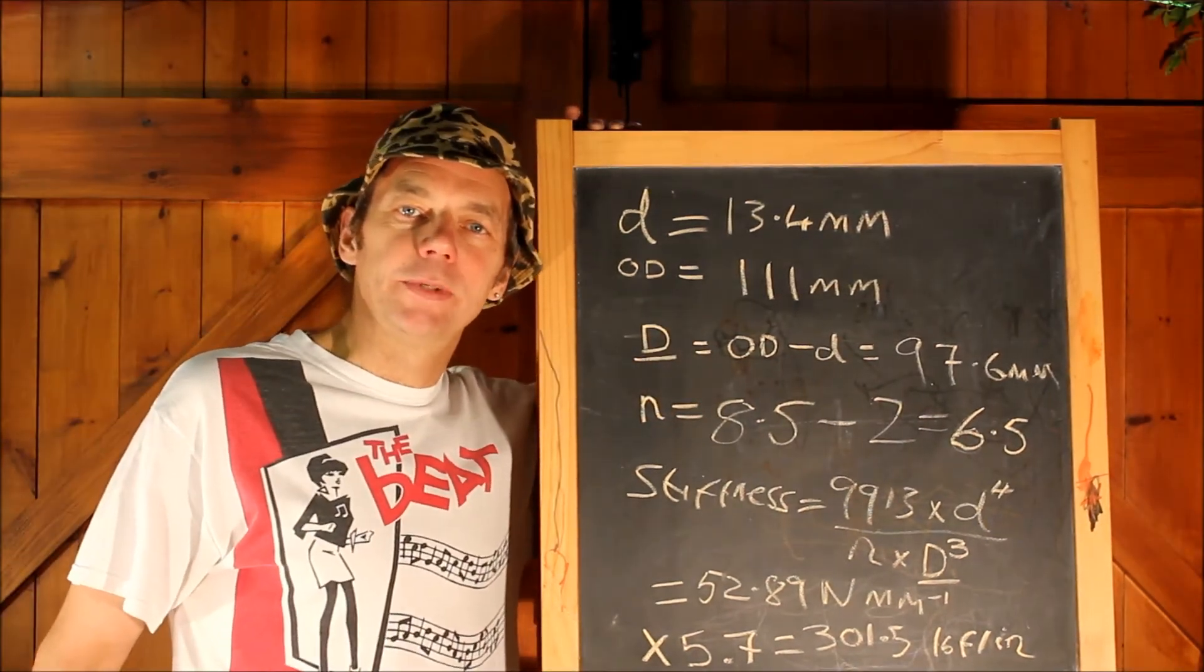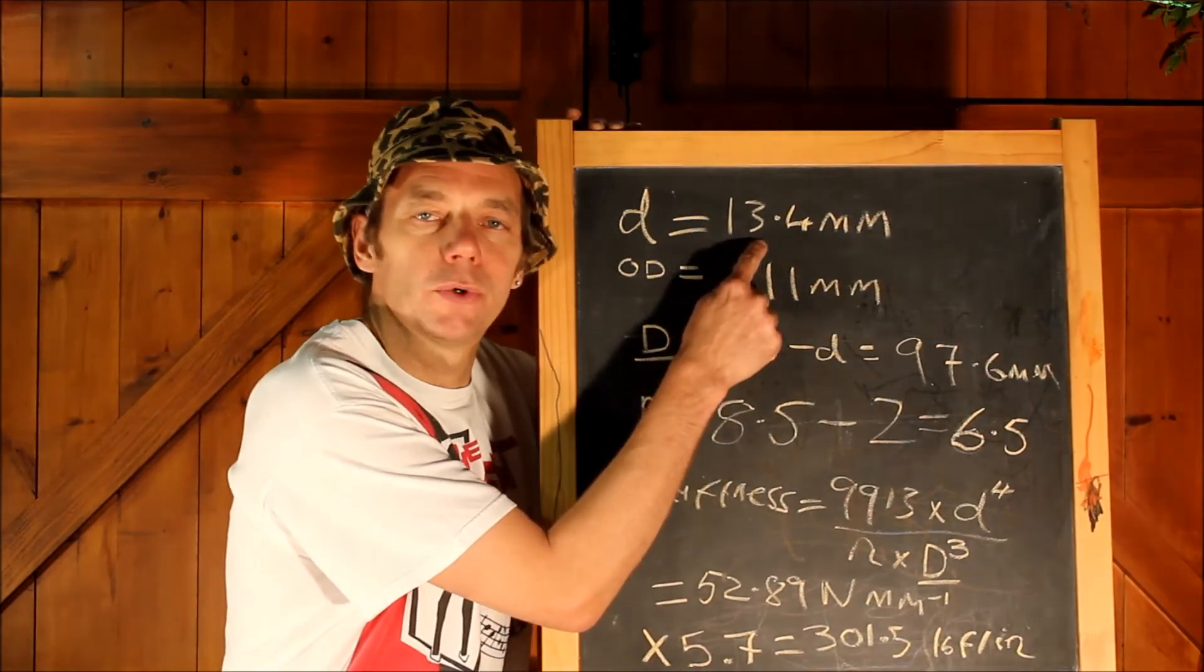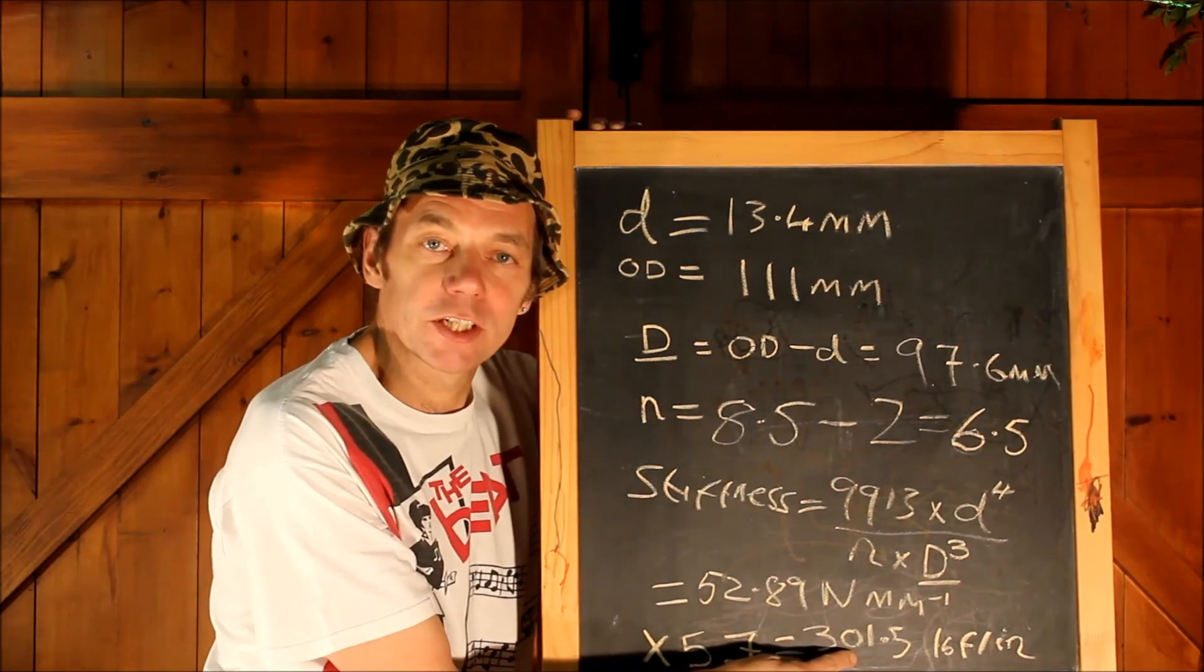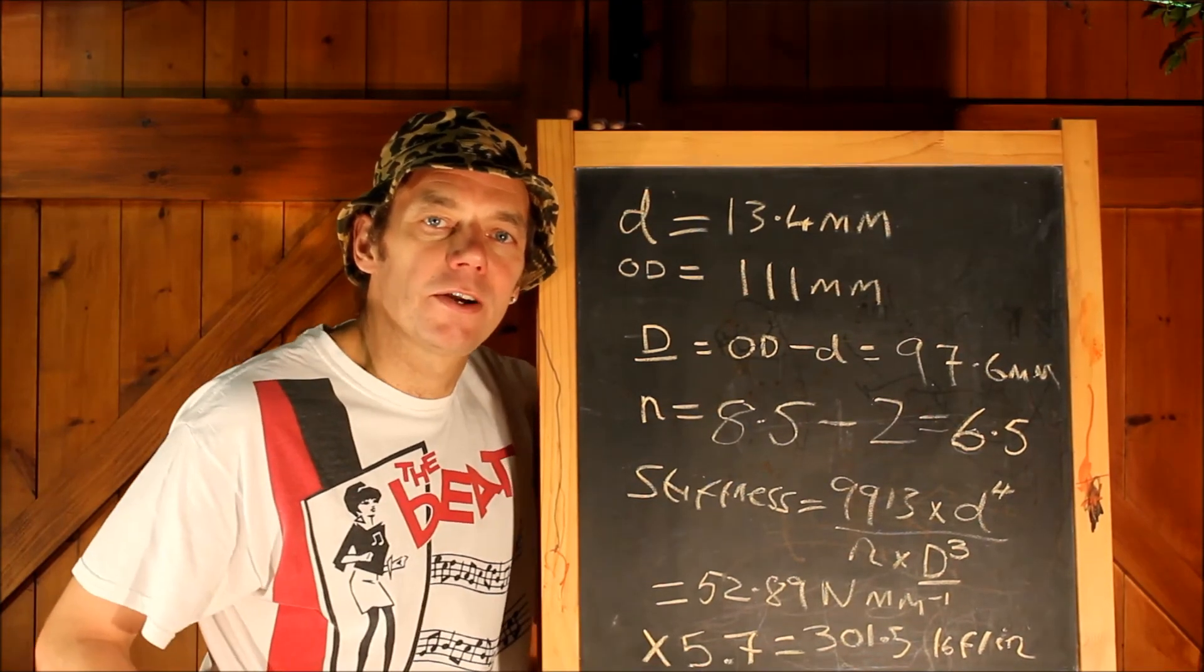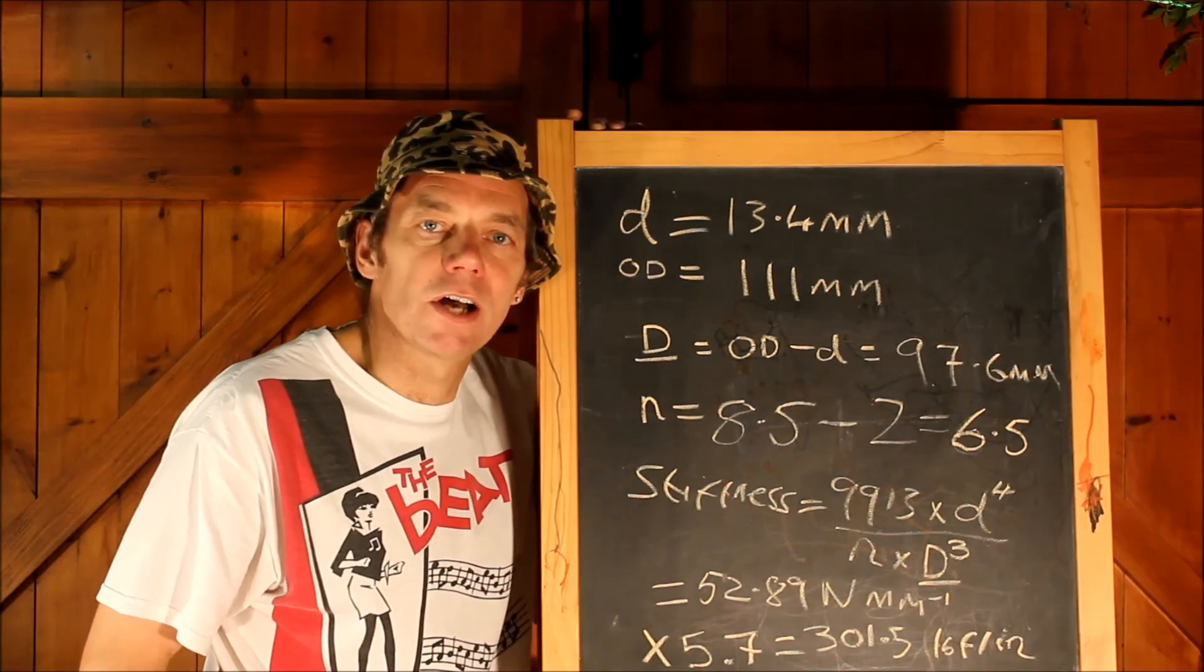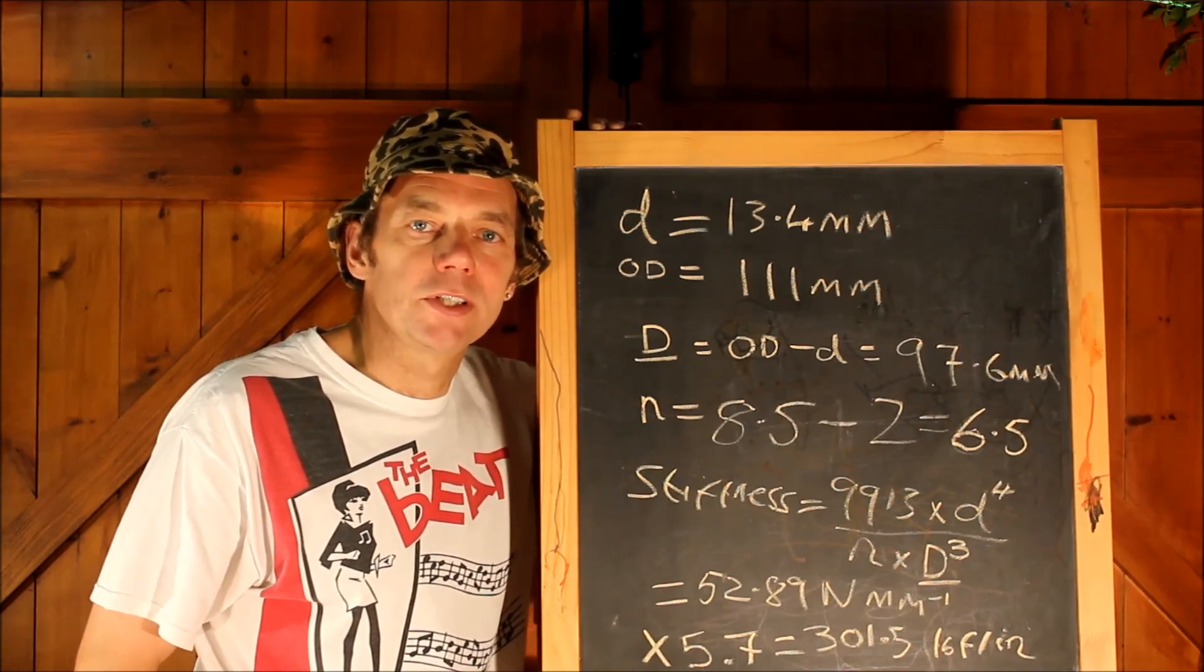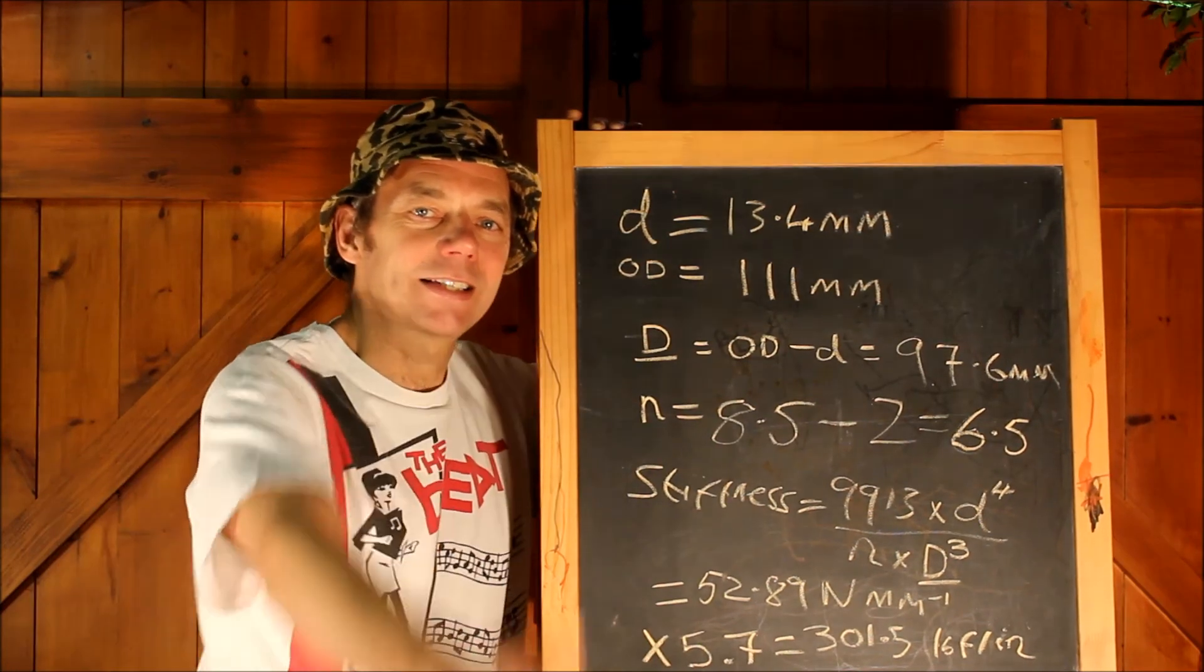And finally, look after your springs and don't let them get too rusty. Because if you re-run these calculations taking just a quarter of a millimeter off that average wire diameter at the top there, you'll find that the stiffness of this spring goes down by over 7.5%. So springs don't get soft with age necessarily because the material properties have changed over time, it's often just because the wire has been thinned by rusting. So keep the underseal topped up on your springs and they'll continue to keep you off the road. See you next time.